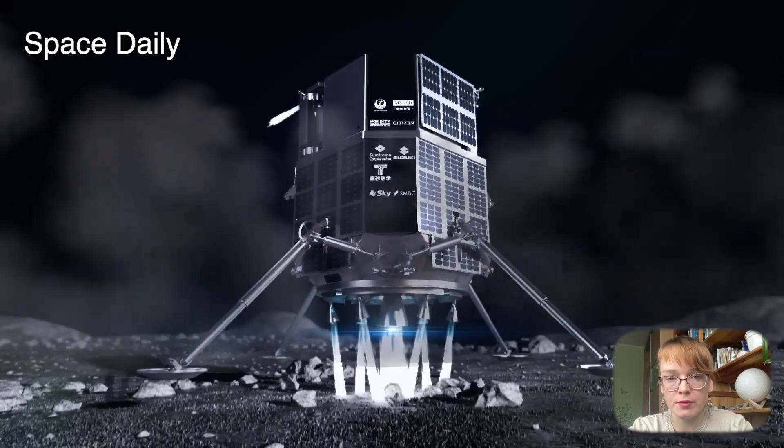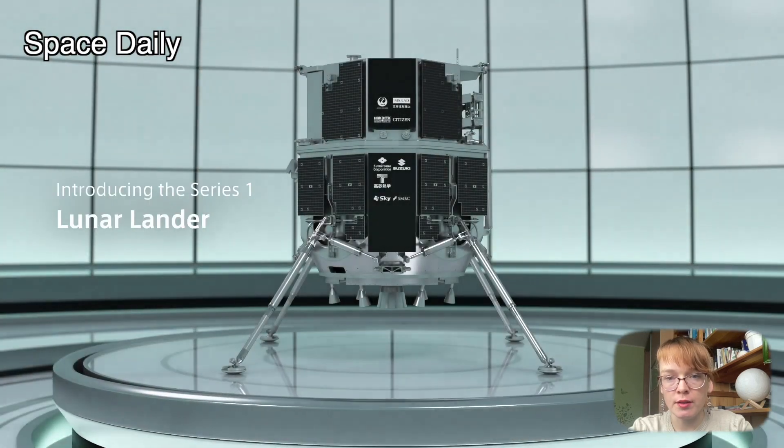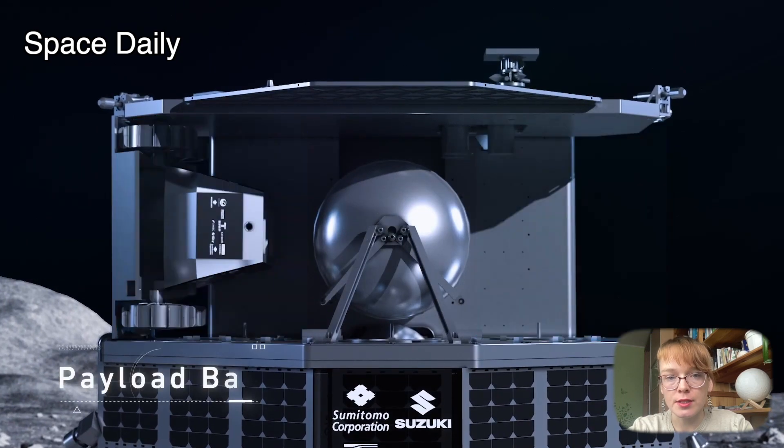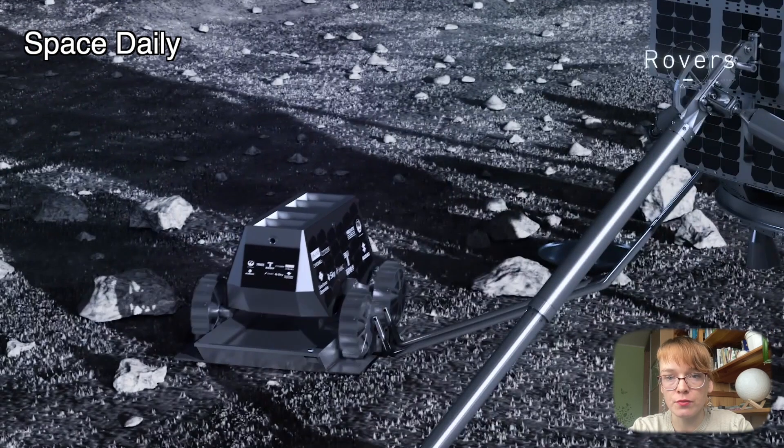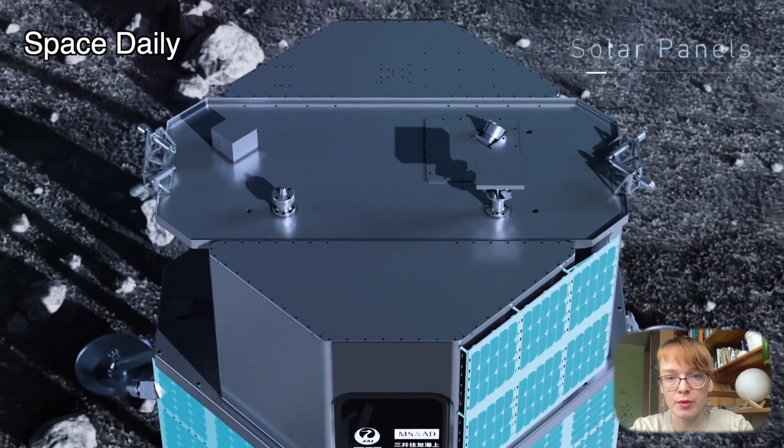The Hakuta R spacecraft is about 2.3 meters high, 2.6 meters wide, and weighed about 1,000 kilograms. It carries a set of payloads from client companies and organizations, including, for example, a small Rashid rover developed by the United Arab Emirates.